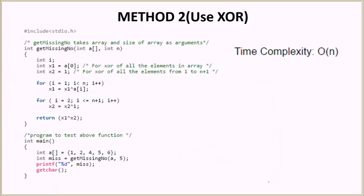Now let's look at the code. We will be using the same driver function here. Let's understand this function. Same input arguments. Here X1 will contain the XOR of all the elements in the array. X2 will contain the XOR of all the elements from 1 to n plus 1.